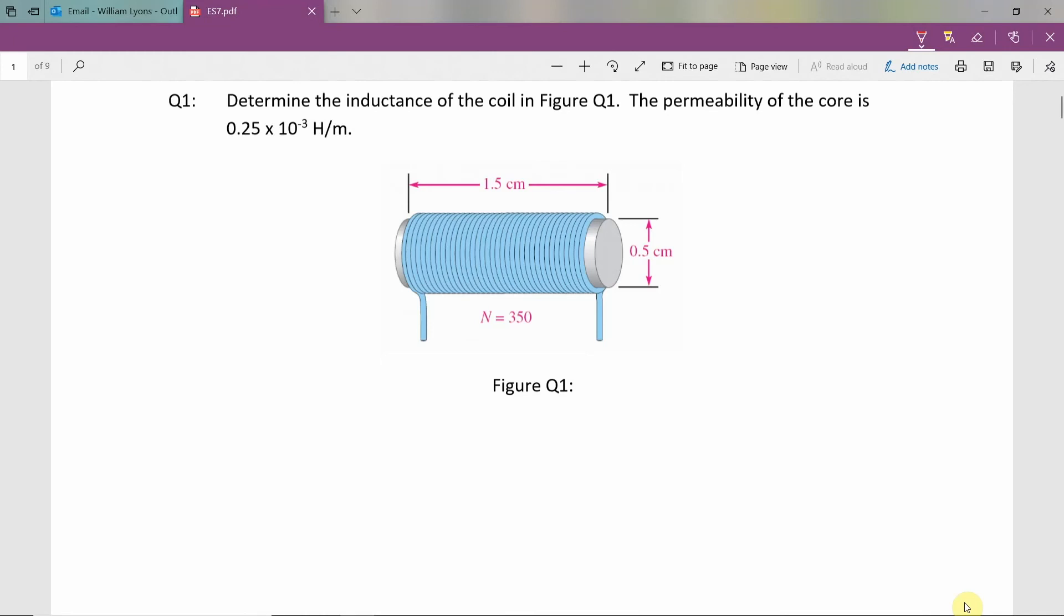In this question, we are asked to determine the inductance of a coil. We are told the permeability of the coil is 0.25 by 10 to the power minus 3 Henry's per meter.